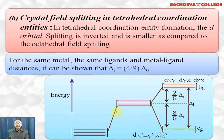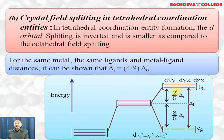In tetrahedral complexes, the d orbitals on the axes (dx²−y², dz²) do not feel strong repulsion and have lower energy, forming the eg set. The dxy, dyz, and dzx orbitals lying between the axes feel more repulsion and have higher energy, forming the t₂g set. This is why the splitting is inverted compared to octahedral. The total energy of separation is called crystal field splitting energy, denoted by Δt.